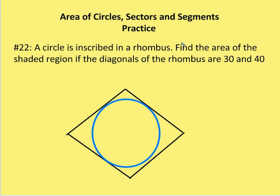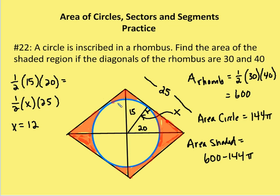Moving on: circles inscribed in a rhombus — find the area of the shaded region when the diagonals are 30 and 40. The shaded region is in red. I have half-diagonals of 15, 15, 20, and 20. I'm going to find the area of the rhombus and subtract the area of the circle. The area of the rhombus is one-half times the product of the diagonals: one-half of 30 times 40 gives 600 square units.